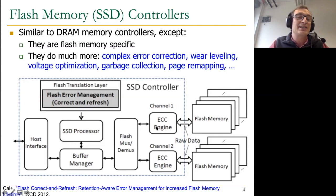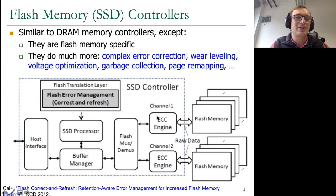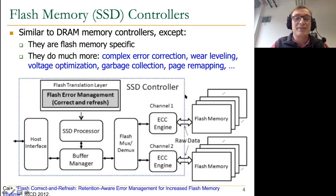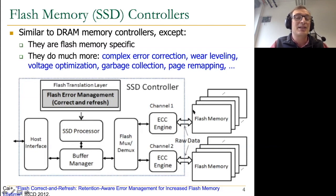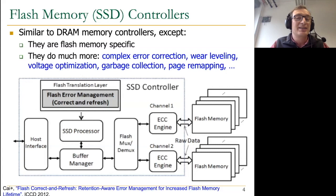Silent data corruption is similar to Byzantine failures and potentially to Rowhammer. There are other things an SSD controller does, like wear leveling, because every write to a cell reduces its endurance — you can only write a cell a finite number of times before it fails. Controllers manage wear out across cells so each cell or row wears almost equally, extending the lifetime of the entire flash storage.